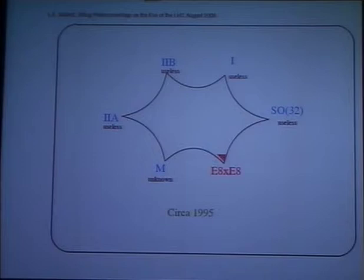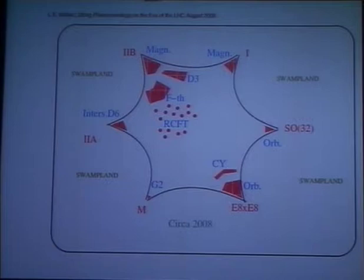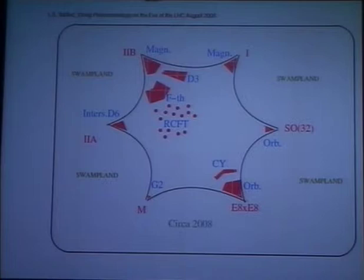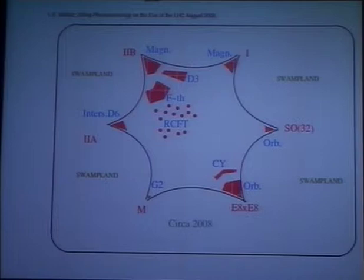Things have changed quite a bit in 13 years. This is more or less an artist's view of what is the situation of our knowledge of the MSSM landscape at present. We have increased our understanding of the compactification of E8×E8 models down to something resembling the standard model, not only in orbifolds, but also in Calabi-Yau manifolds. We now also know how to construct realistic models in type I and SO(32) heterotic string. We have learned a lot from type IIB orientifolds, magnetized branes, D-branes at singularities, F-theory, and plenty of points in rational conformal field theory orientifolds, and also intersecting D-branes.